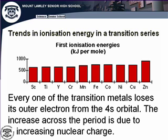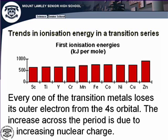If we look at transition metals — and while this course only covers the first 20 elements, it is reasonable to consider transition elements — every one of the transition metals loses its outer electron from the 4s orbital. Because it's coming from the same distance with the same shielding, the only factor that comes into play is the increasing nuclear charge. Relatively, going from 25 to 26 protons is not a large increase, so there is just a very slight increase in ionization energies across the transition metals.